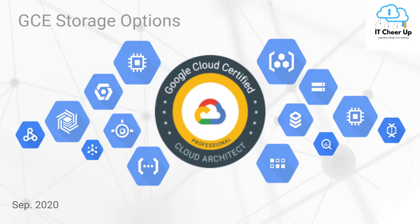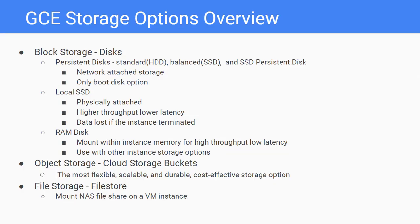Let's talk about GCE storage options today. I mentioned I will make a video on this topic in the GCP storage and databases decision tree of the last-minute cheat sheet for GCP PCA exam. Google Compute Engine offers several types of storage options for your instances: disk options for block storage, cloud storage buckets for object storage, and file store for file storage. In here I highlight the keywords of these storage options for the exam.